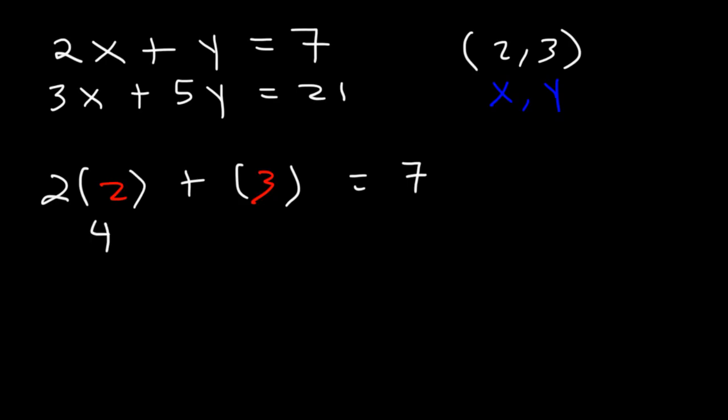Now, 2 times 2 is equal to 4, and 4 plus 3 is indeed equal to 7. So the ordered pair works for the first equation, but for it to be true, it must also work for the second equation.